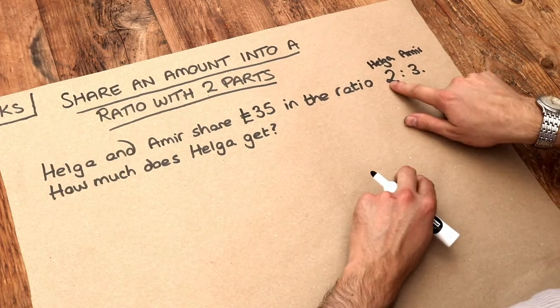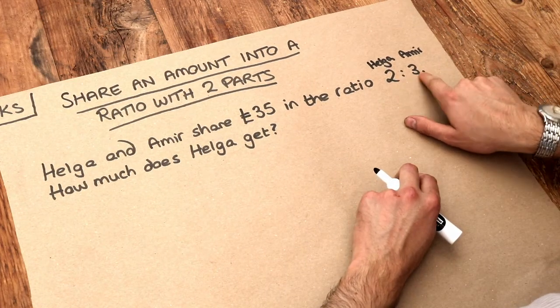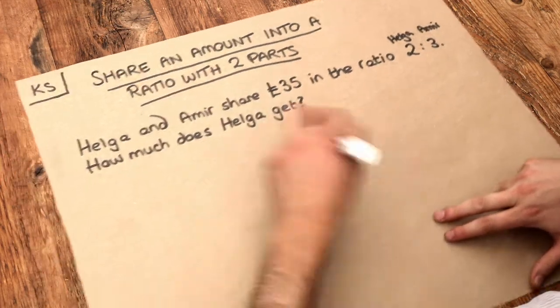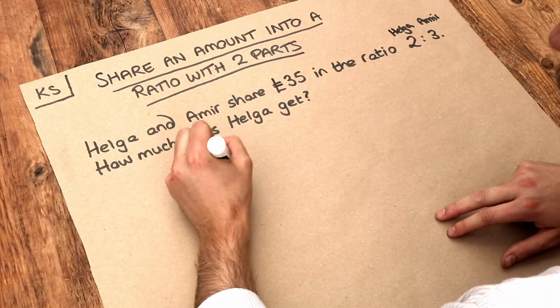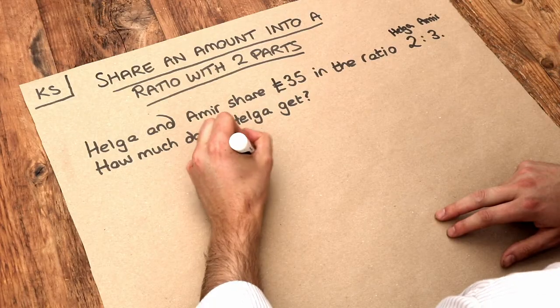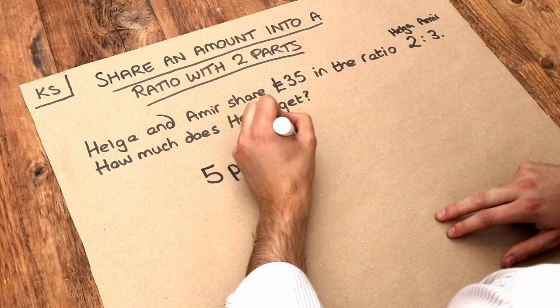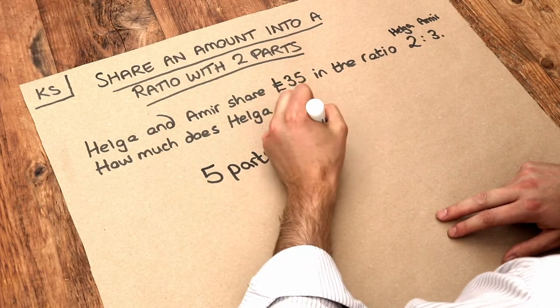So how many parts do we have in total if Helga gets two parts and Amir gets three parts? Well, there are five parts in total. So the way we do our working is we write: five parts — that's the total parts — is equal to £35.